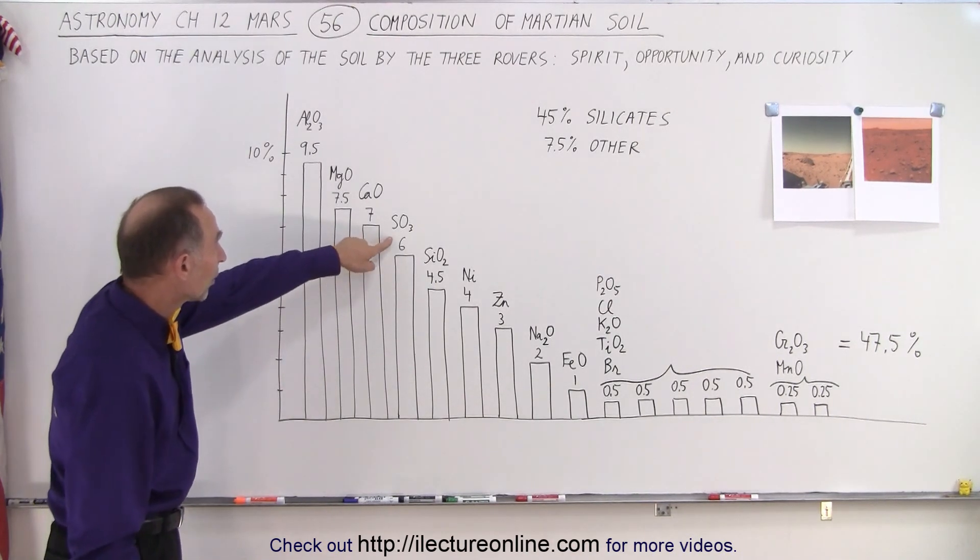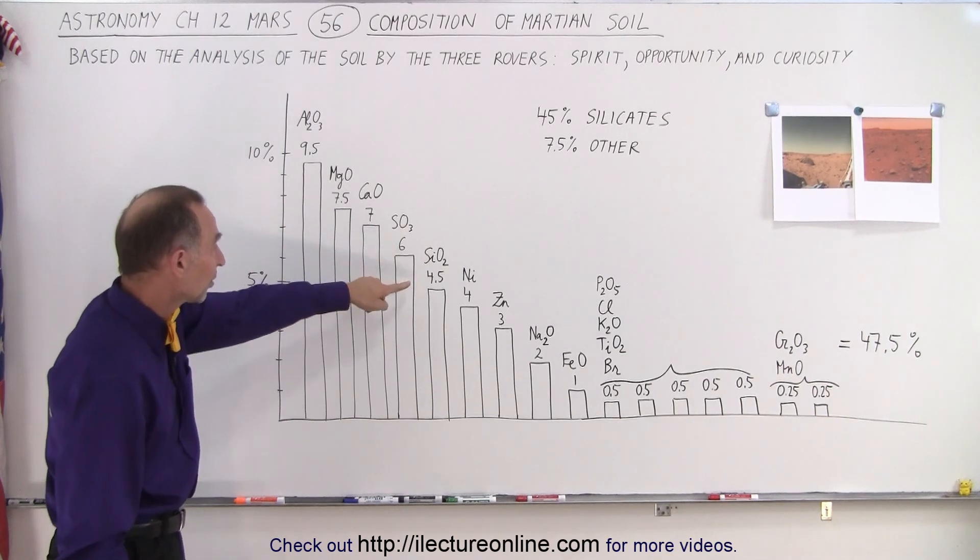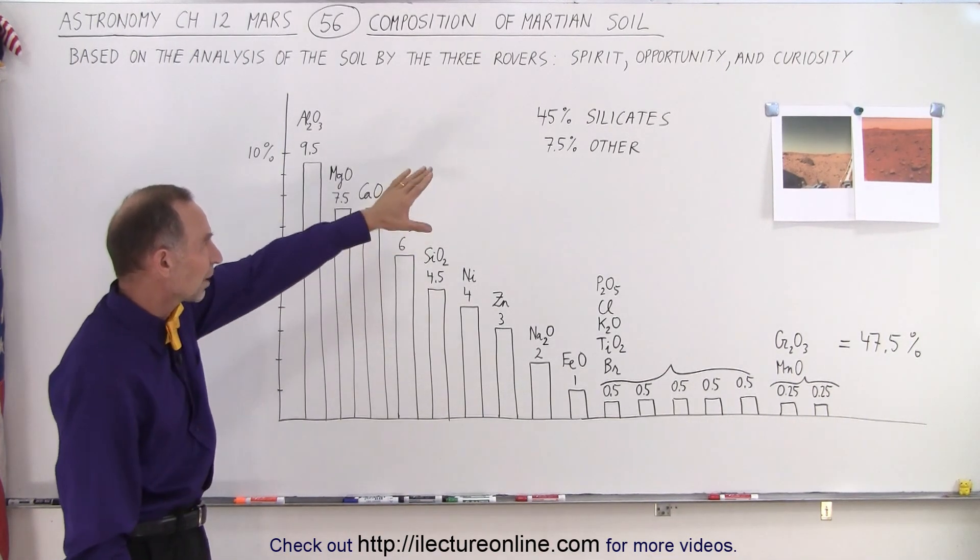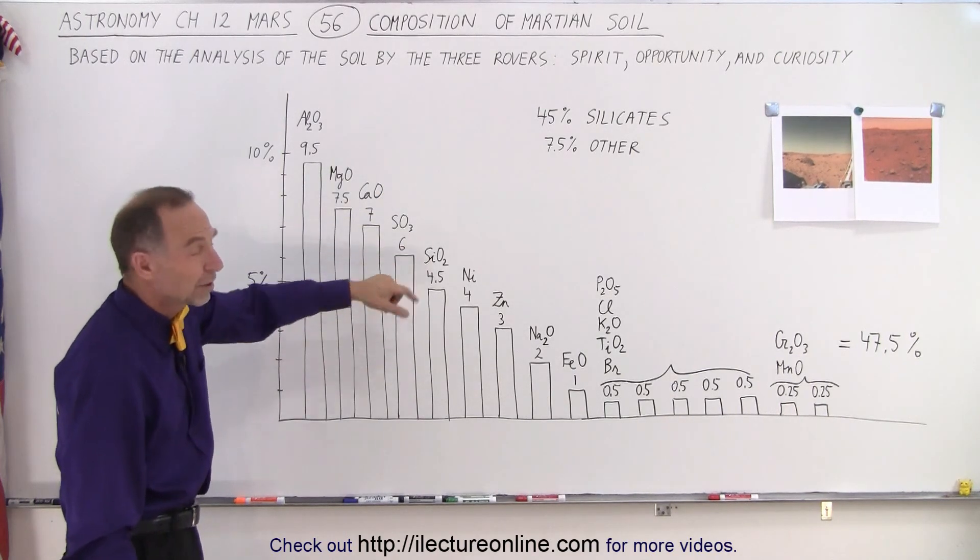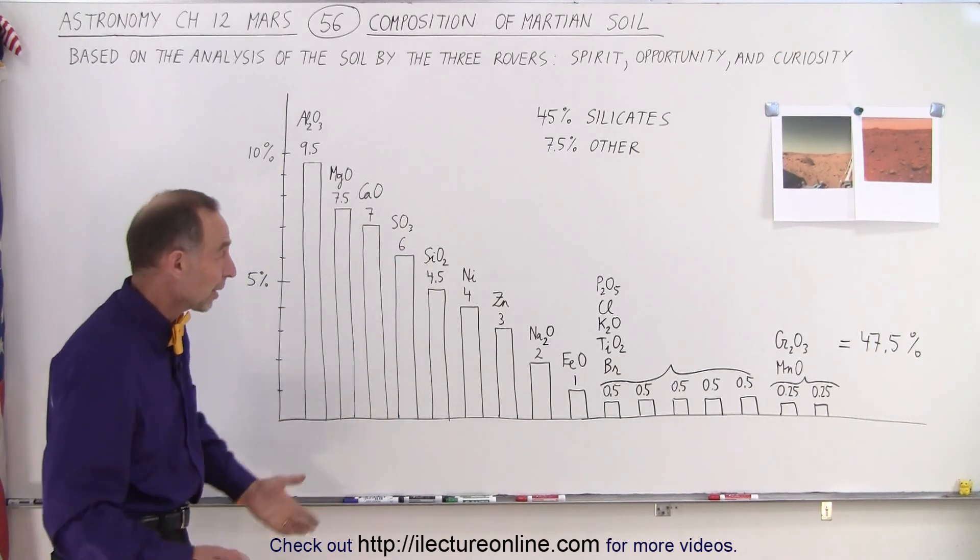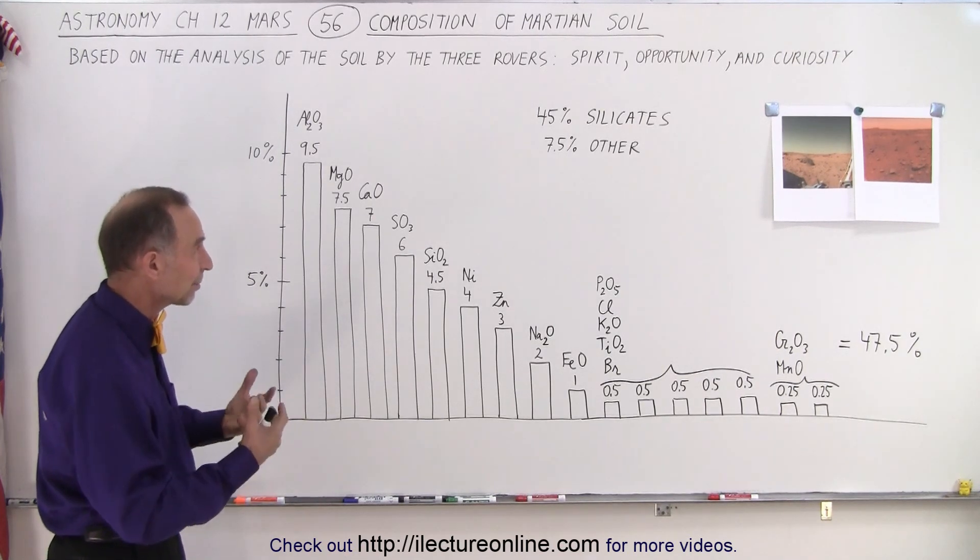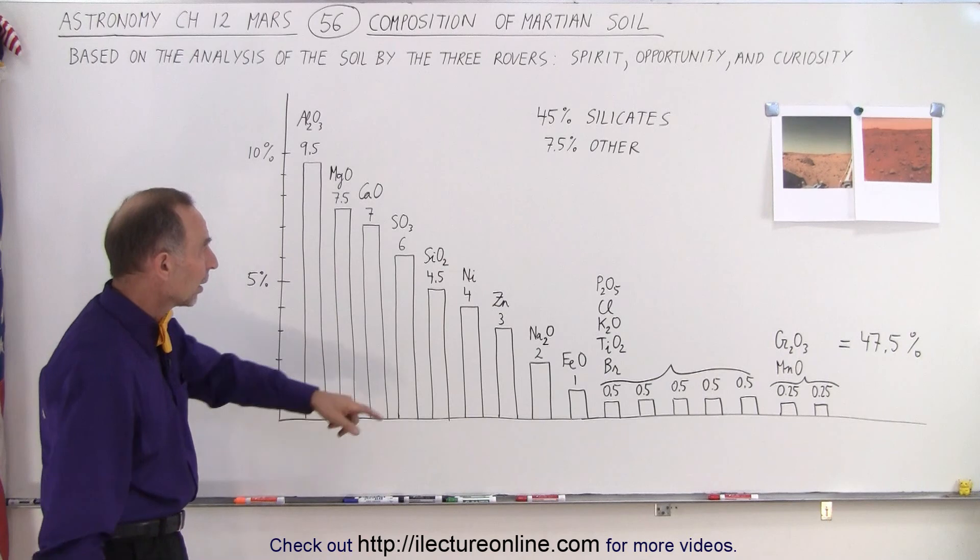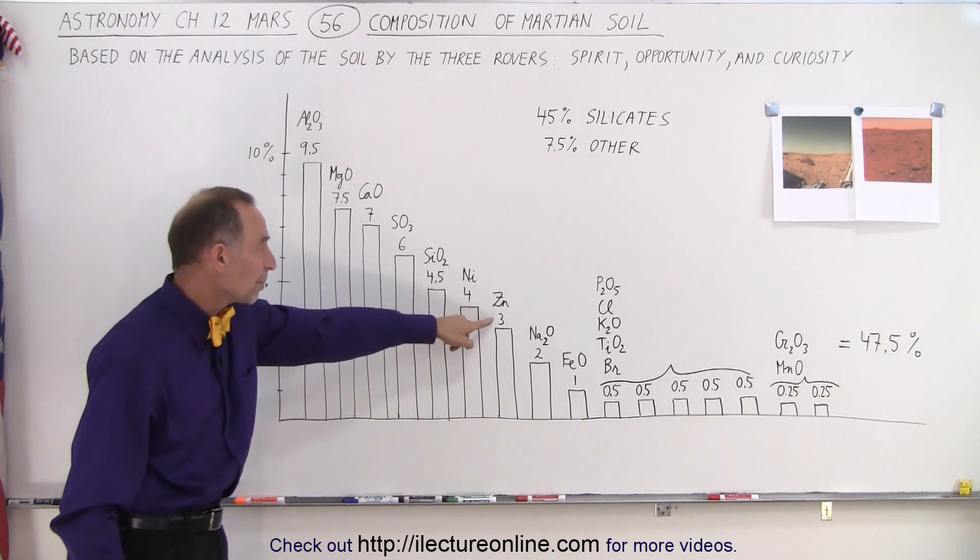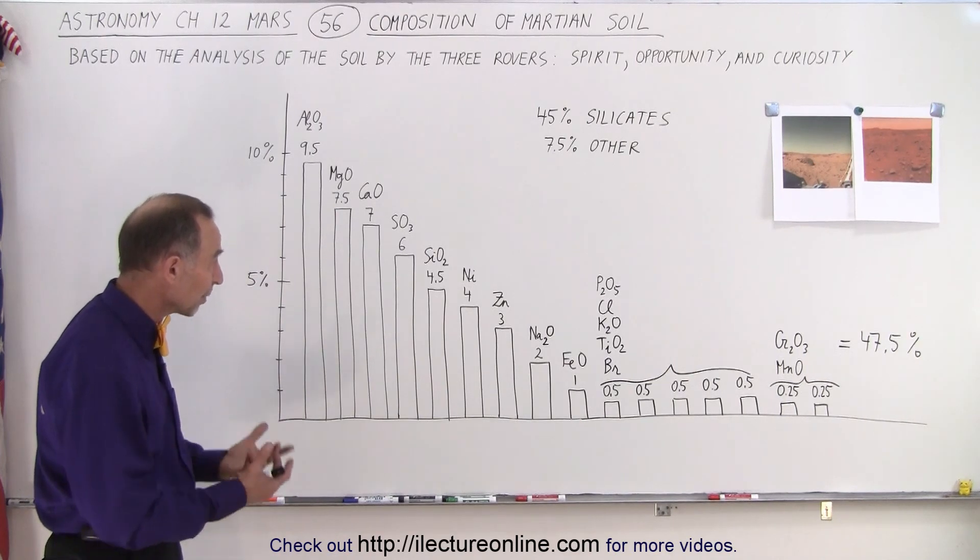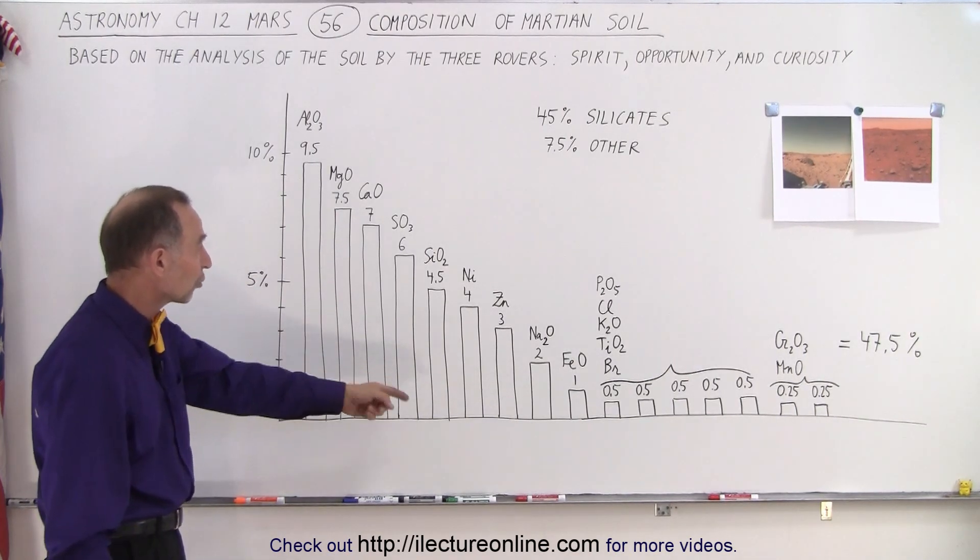Then we have sulfur trioxide and silicon dioxide at 4.5%, which is surprising, but then notice there's a lot of other silicates in the soil because silicon dioxide, of course, is the primary constituent of the Earth's crust. They would expect the same to be the case for Mars. Notice 4% nickel and 3% zinc, which is quite an enormous amount when you think that these metals were found to these quantities in the Martian soil.